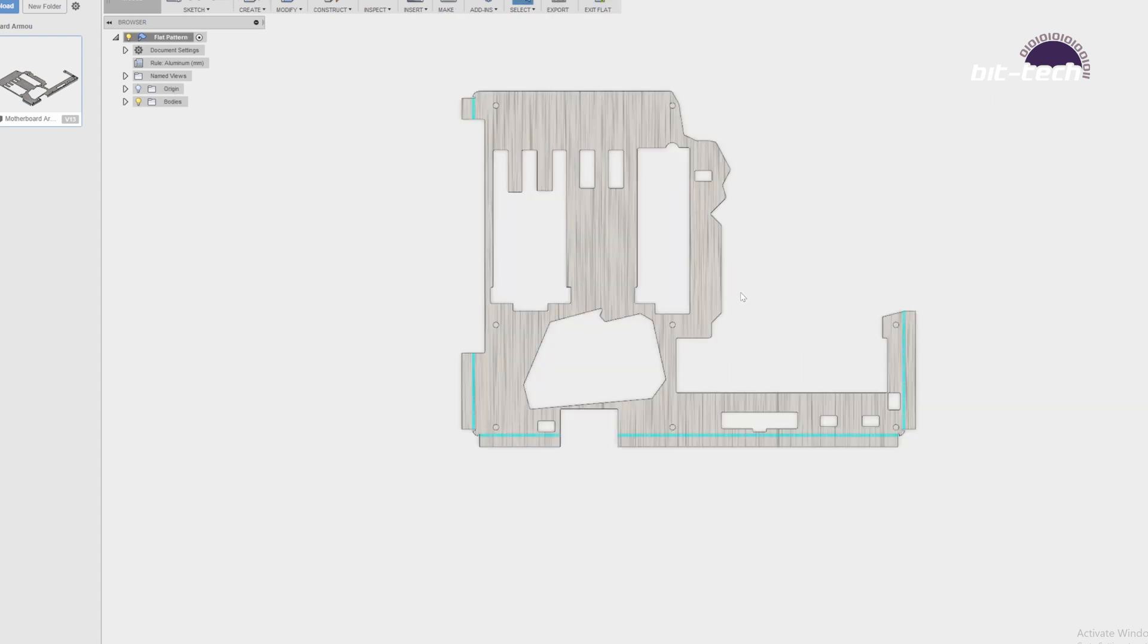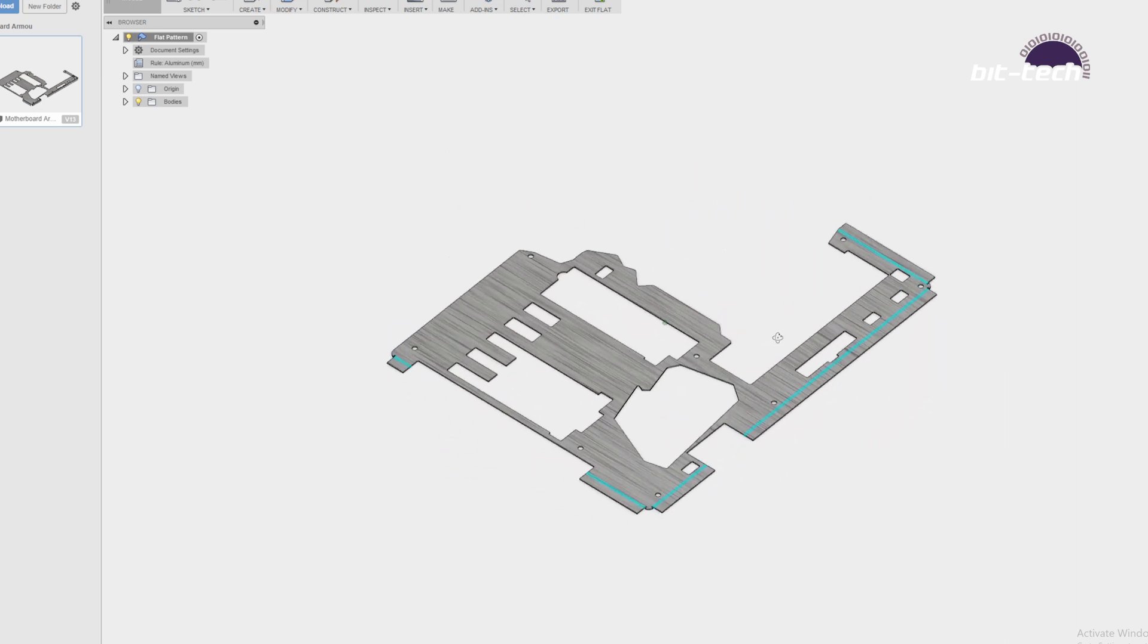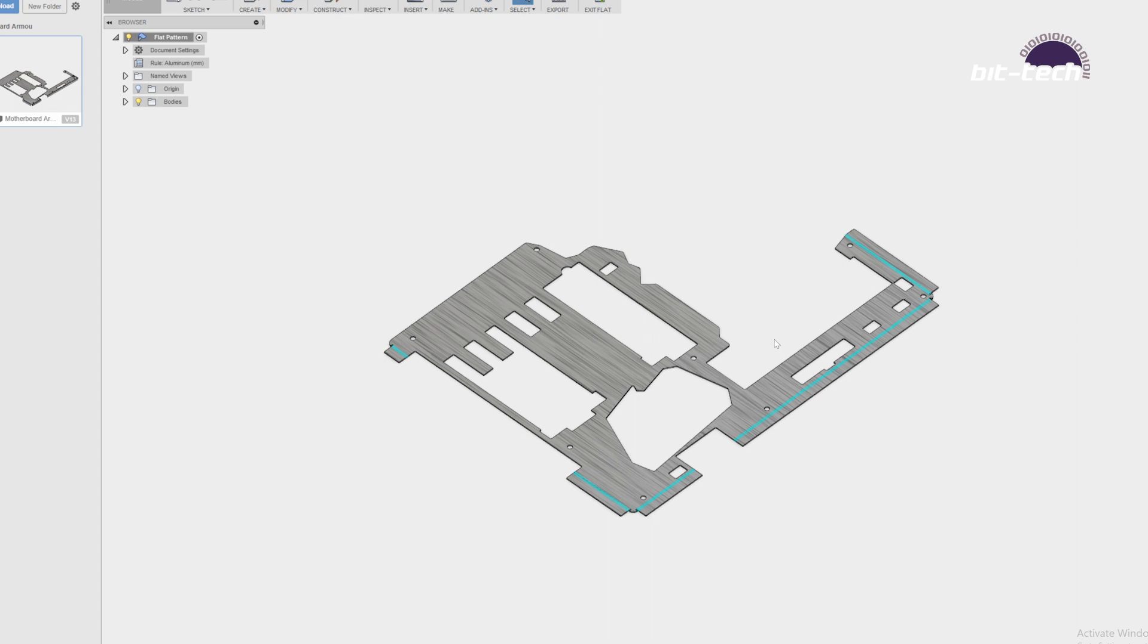Using the sheet metal modeling environment, I've used 1mm aluminum as the basis for the armor. I've left a 0.5mm gap between the armor and any components. I've also been careful to consider what cutting tools I have available.